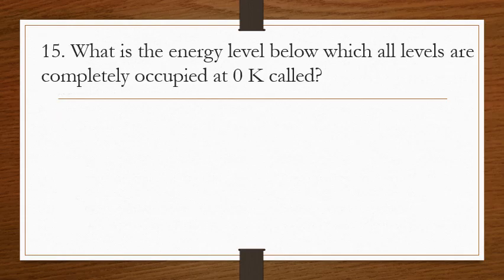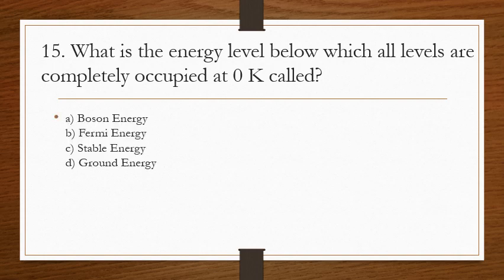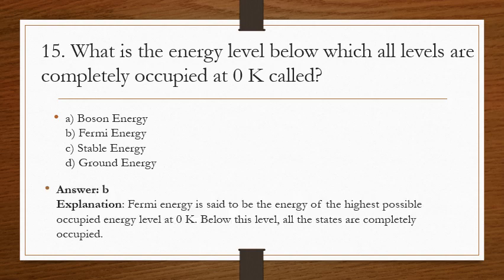Question 15: what is the energy level below which all levels are completely occupied at zero Kelvin called? The correct answer is B. Fermi energy is the energy of the highest possible occupied energy level at zero Kelvin. Below this level, all the states are completely occupied, and above it, all the states are empty.